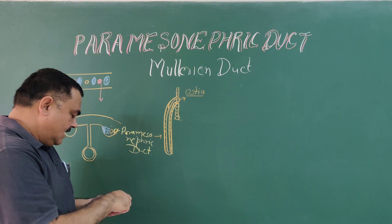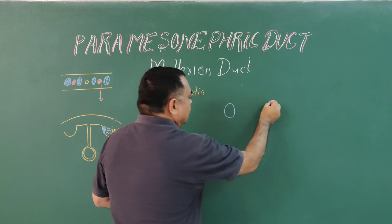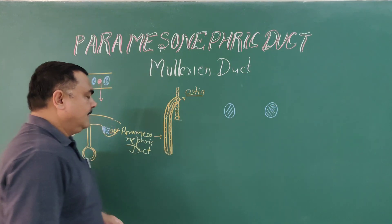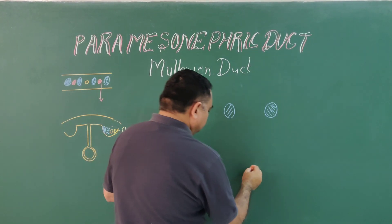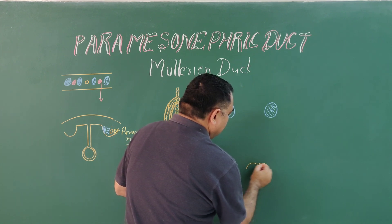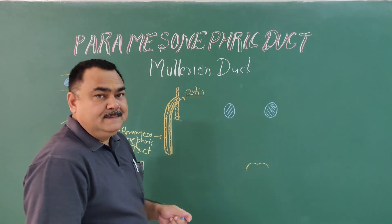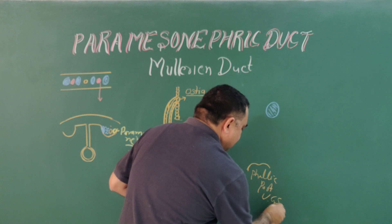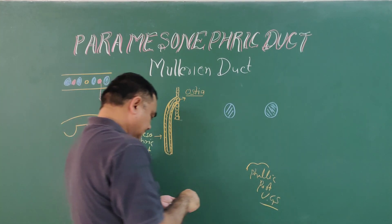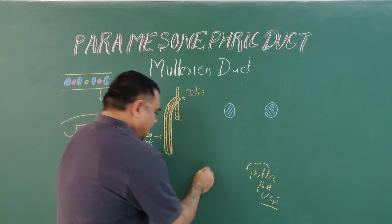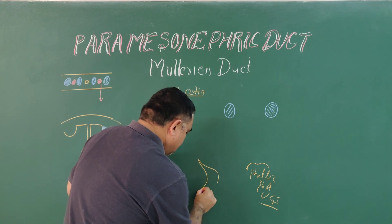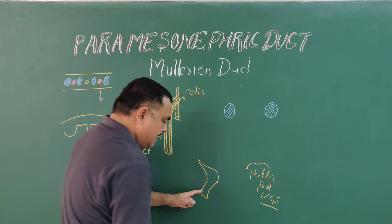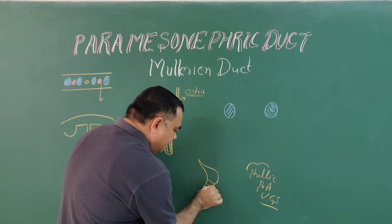Here you can see the position of the developing gonad. In case of the female, this is the ovary. Here is the position of the phallic part of the urogenital sinus. The cloaca divides into the primitive urogenital sinus and rectum. So this is the urogenital sinus.